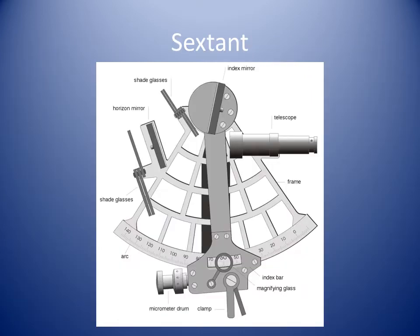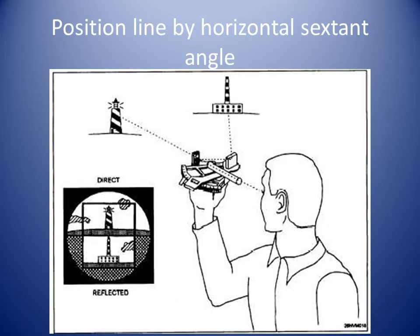The sextant is a device mariners have been using to measure angles for centuries. A sextant or compass can be used to measure the horizontal angle between charted landmarks, and a position line showing the observer's distance off from the landmarks can be calculated.